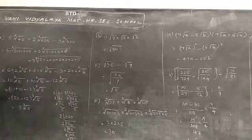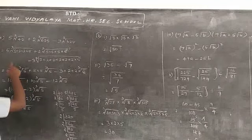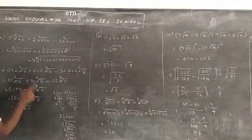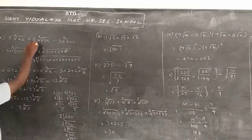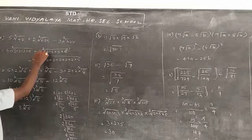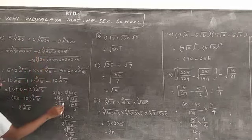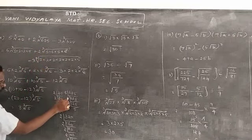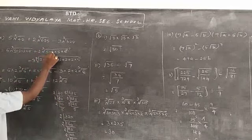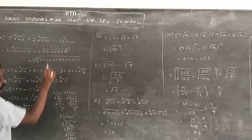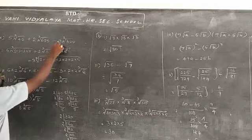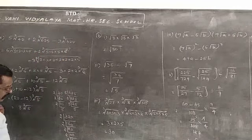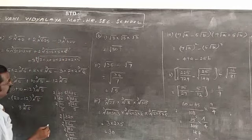So here I am going to substitute: 5 cube root of 2 × 2 × 2 × 5, plus 2 cube root of 5 four times, minus 3 cube root of 2 six times and 5.